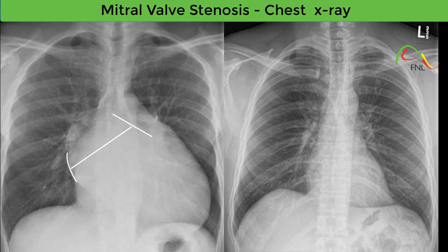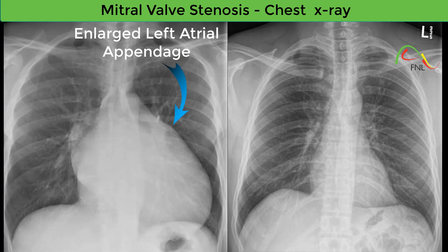Enlarged left atrial appendage. The enlarged left atrial appendage appears as a convex bump just below the main pulmonary artery, also known as the third mogul sign. The left cardiac border just below the main pulmonary artery should be flat or concave on a normal chest radiograph — this area represents the left atrial appendage. Convexity of the left atrial appendage contour is a direct sign of left atrial enlargement.